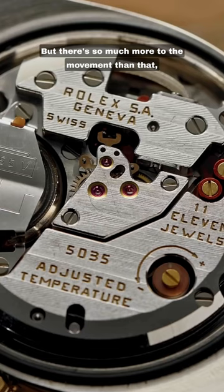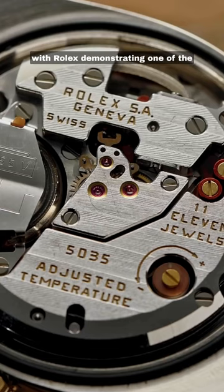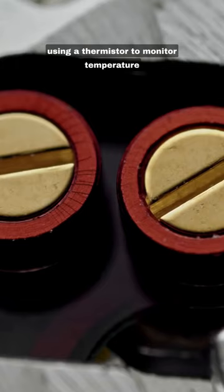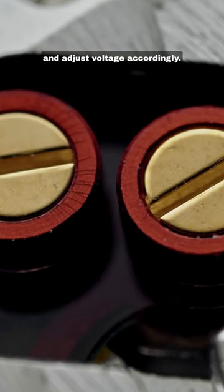But there's so much more to the movement than that, with Rolex demonstrating one of the first examples of thermo-compensation, using a thermistor to monitor temperature and adjust voltage accordingly.